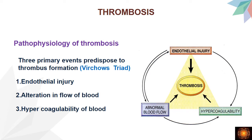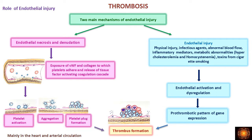Now we'll see the individual factors causing thrombosis. Coming to the role of endothelial injury, two main mechanisms are involved. One is when there is endothelial injury causing endothelial necrosis and denudation of the endothelial cells. When denudation occurs, the subendothelial von Willebrand's factor and collagen are exposed, leading to platelet adhesion. Additionally, adjacent damaged endothelial cells release tissue factors, causing activation of the coagulation cascade.